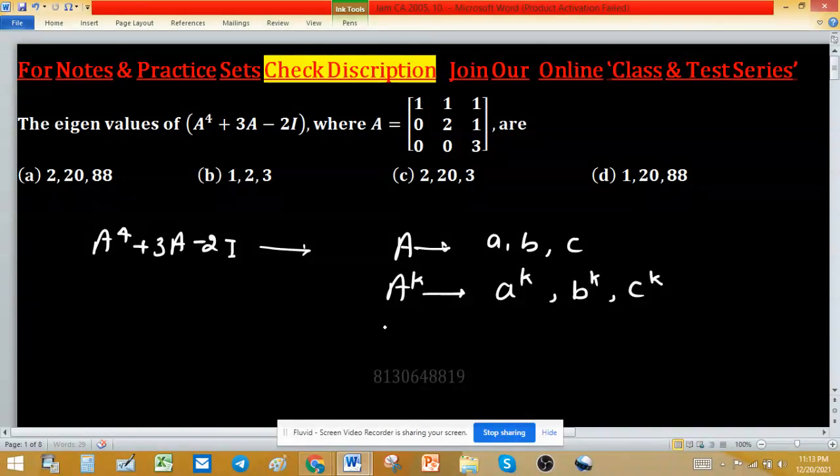If we scale the matrix with the scalar m, then eigenvalues will be m times a, m times b, m times c.